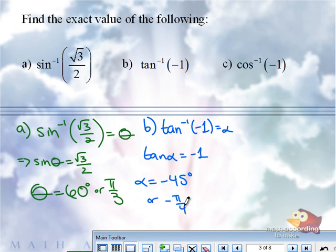So again, the tangent of what angle between negative pi over 2 and pi over 2, or negative 90 and 90, is negative 1? Negative pi over 4. How could this possibly get worse?